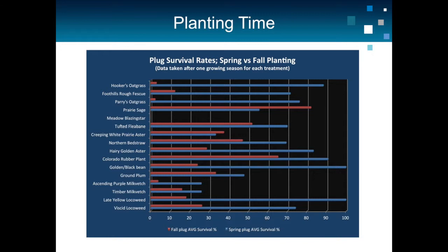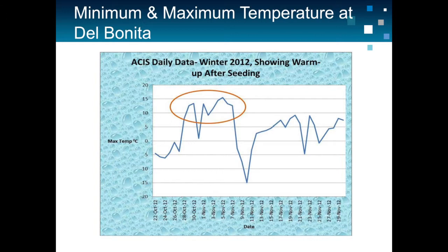If you move to the Longview area, you may actually have better success with fall planting than spring planting — so site conditions really dictate the kind of success you have. Temperature plays a huge part: when it was frozen, we had frozen plugs, but then a warm spell caused them to green up, and when it froze again, the plants didn't have enough time to adapt.